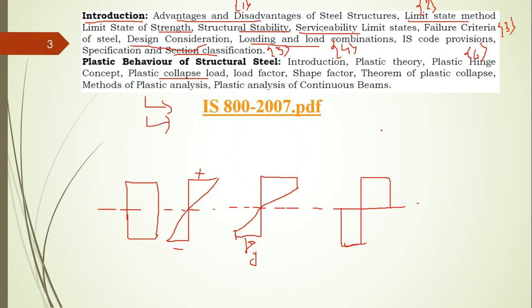In the fully plastic state, the beam is free to rotate from one fixed end — there will be rotation and continuous yielding of the member. This state is called a plastic hinge. Plastic load is the load at which this type of stress distribution (fully plastic) occurs. There is also a load factor to consider when increasing load, and the shape factor concept arises here.